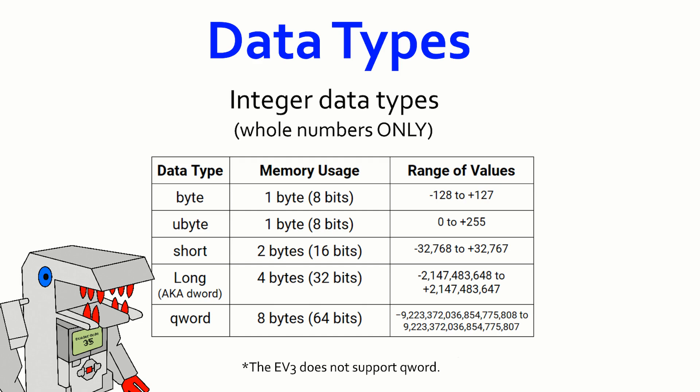One quick little side note, if you're planning to program the EV3 in C, you should know that the EV3 does not support qword or any other 64-bit data type, because the EV3 itself is only a 32-bit architecture.